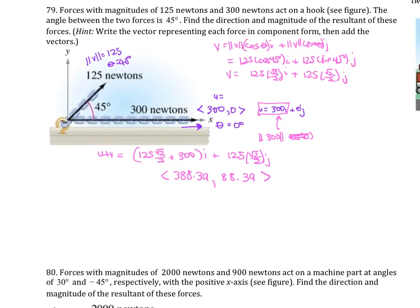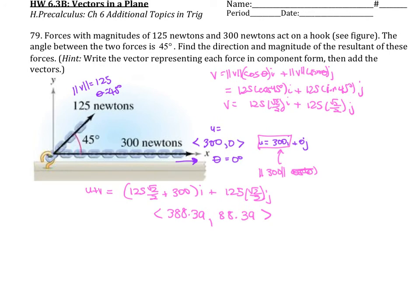Okay, so that is the component form of the two forces. And so this is our resultant vector. And so we want to find the magnitude. So the magnitude of u plus v equals the square root of 388.39 squared plus 88.39 squared. And so when you plug that in, that should be approximately 398.32 newtons.